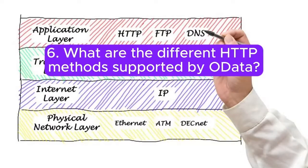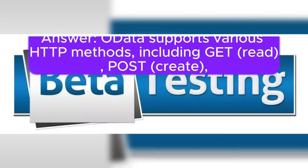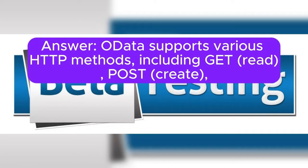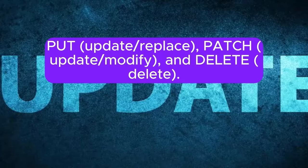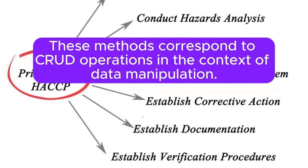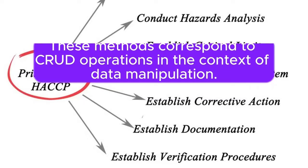Question 6: What are the different HTTP methods supported by OData? OData supports various HTTP methods, including GET (read), POST (create), PUT (update/replace), PATCH (update/modify), and DELETE (delete). These methods correspond to CRUD operations in the context of data manipulation.